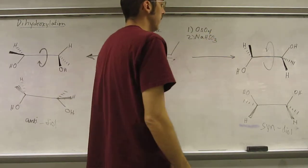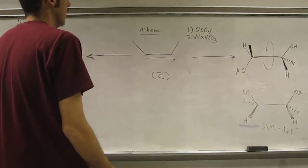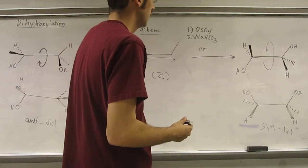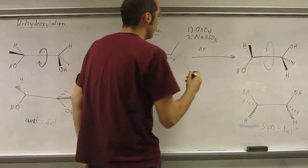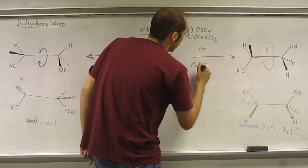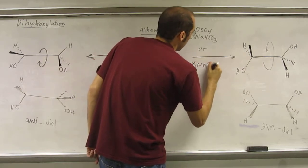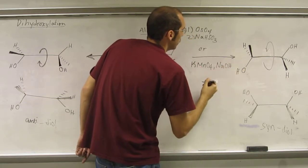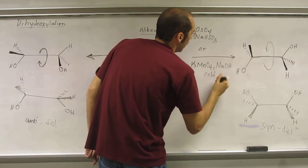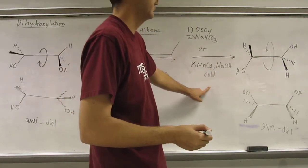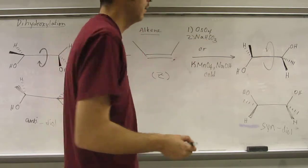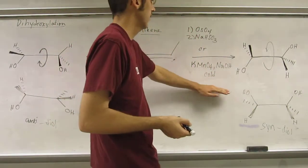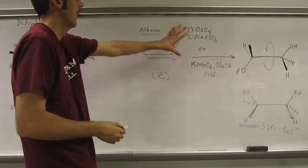Or you could use another set of conditions, more finicky because you've got to keep them at a cold temperature. Potassium permanganate in a basic solution, NaOH, at a very cold temperature. That won't allow the oxidation to go all the way to, in this case, the aldehydes. It'll stop it at the syn-diol stage. So you can do either one of those.